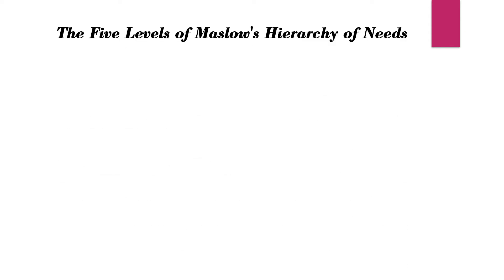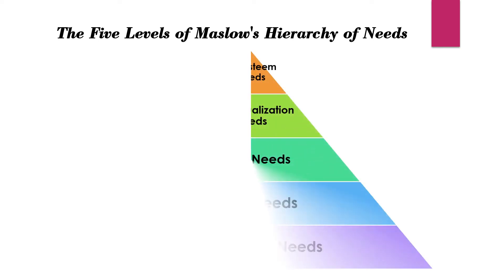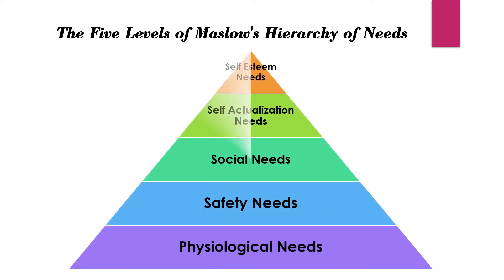As per Maslow, there are five levels of human needs. The very first is physiological needs, the second is safety needs, third is social needs, fourth is esteem needs, and the last is self-actualization needs.